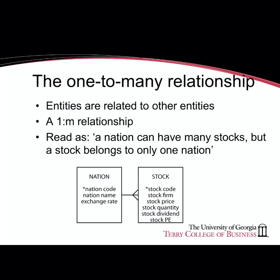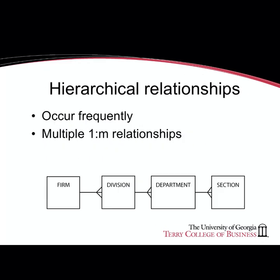The nation entity has attributes: nation code, nation name, and exchange rate. The stock entity has several attributes as well. A nation having many stocks implies that each stock belongs to a nation — a nation can have many stocks associated with it, or a stock belongs to a specific nation. These types of relationships are typically present in hierarchical relationships, which occur frequently within organizations. A firm can have many divisions, a division can have many departments, and a department can have many sections.